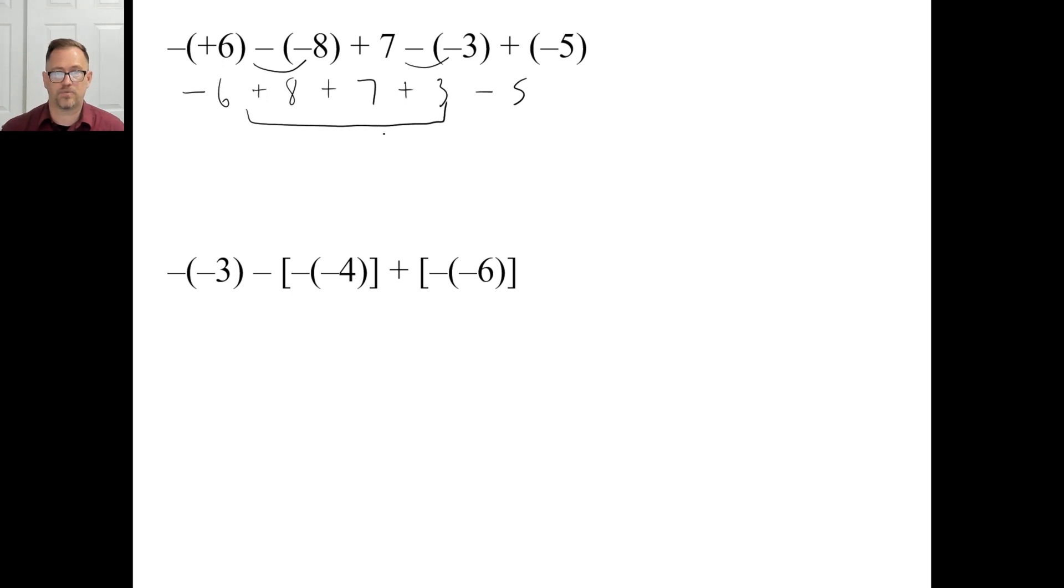So, I mean, that's all we need to do. So let's just get all these positives first. 8 plus 7, 15 plus 3 is 18. And I got a -6. And I got a -5. That's -11. So 18 minus 11, 7. There you go.